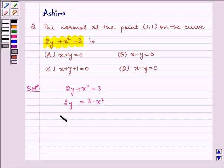Differentiating on both sides we get 2 dy by dx equals minus 2x. The 2s cancel so we get dy by dx equals minus x.